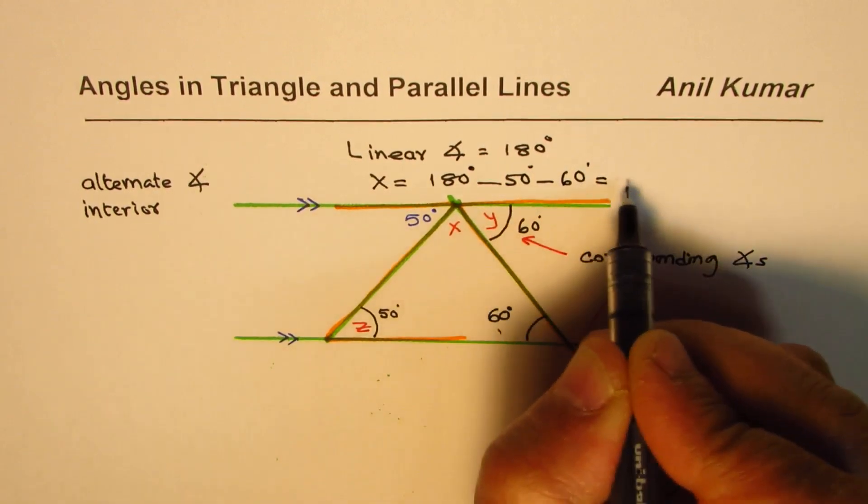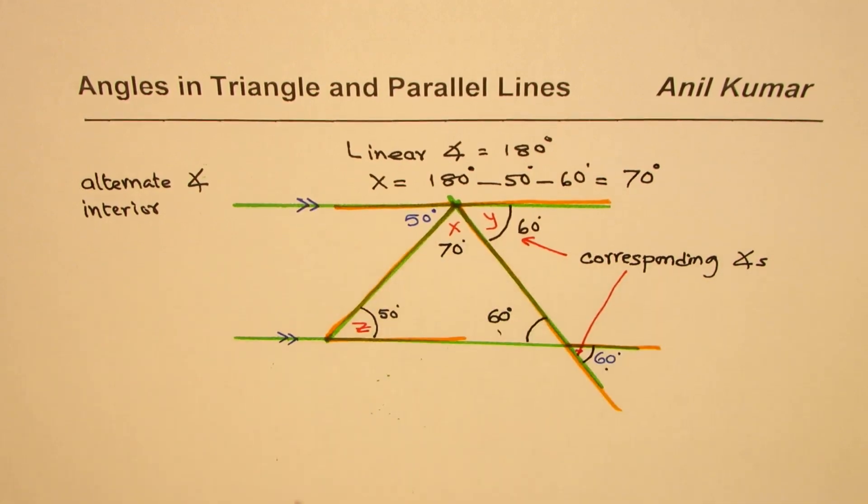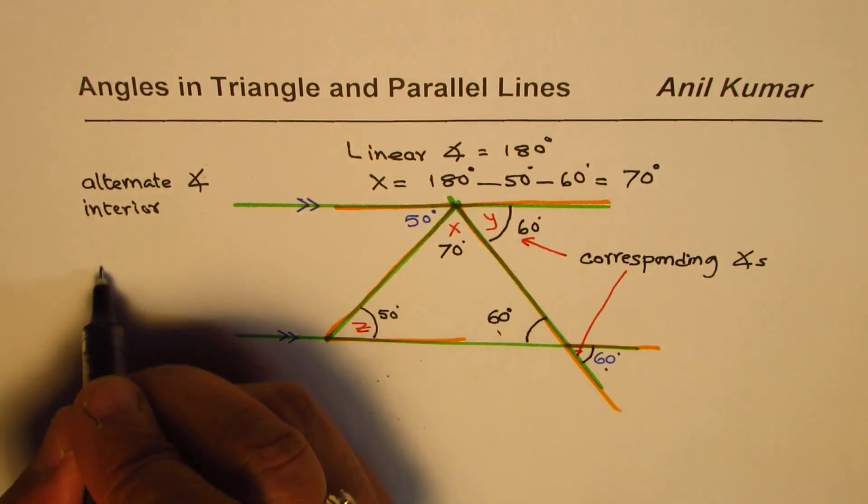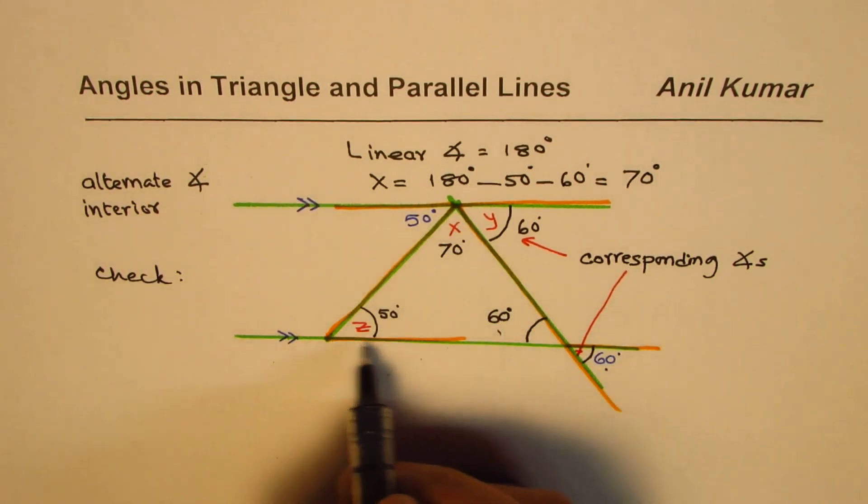So that is 110. You can use calculator to find the answer. You'll get 70 degrees. Now here is a check. Check for you is that within a triangle, what is the sum of angles? It should be 180.